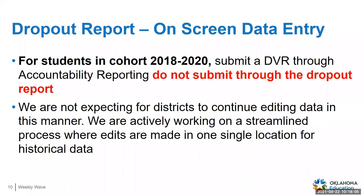This whole situation is at the moment only expected to be in play for the 19-20 dropout report. For school year 2021's dropout report, we are expecting to have a much easier process — very straightforward on where you go to upload documentation and how to request updates to historical information. For this year, we apologize for any burden this process causes. To sum it up: for students in cohorts 2018 through 2020, submit a DVR through accountability reporting — do not submit through the dropout report. For any other student grade seven and up not in those cohort years, you can go into the dropout report and correct the data on screen.